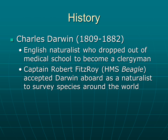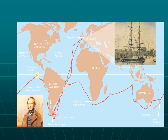The way Darwin came to be such a famous scientist was the fact that there was a captain named Robert Fitzroy who had a boat called the Beagle. He asked Darwin to join him as a naturalist to survey species around the world. This is just a map or an illustration of all the places the Beagle traveled.